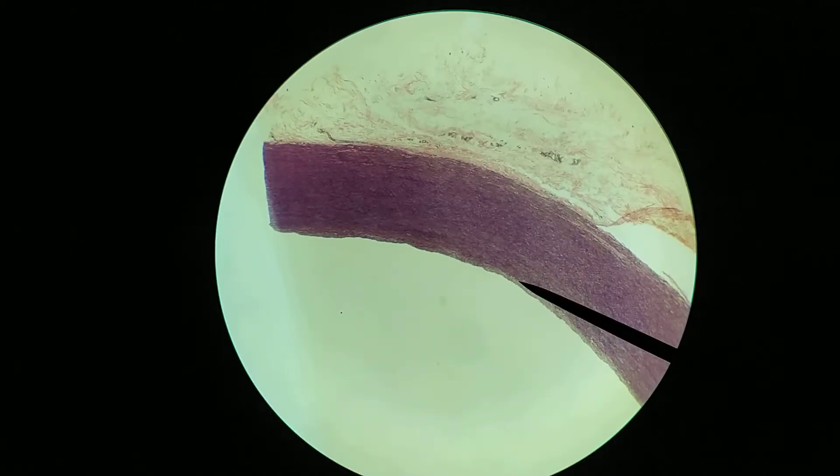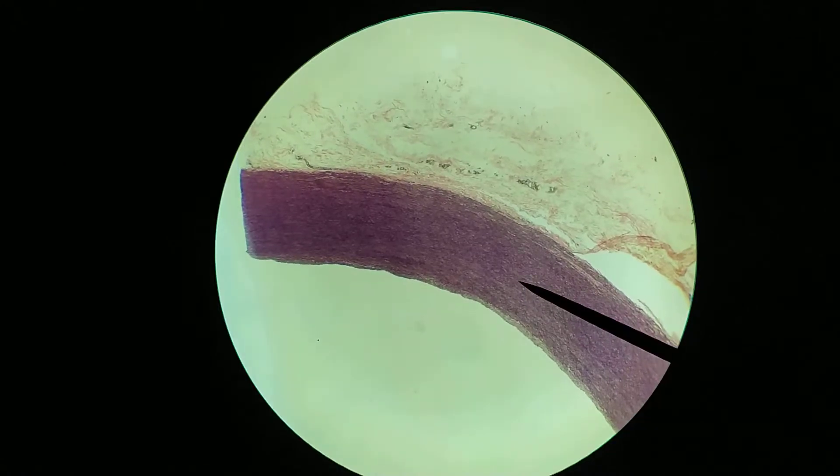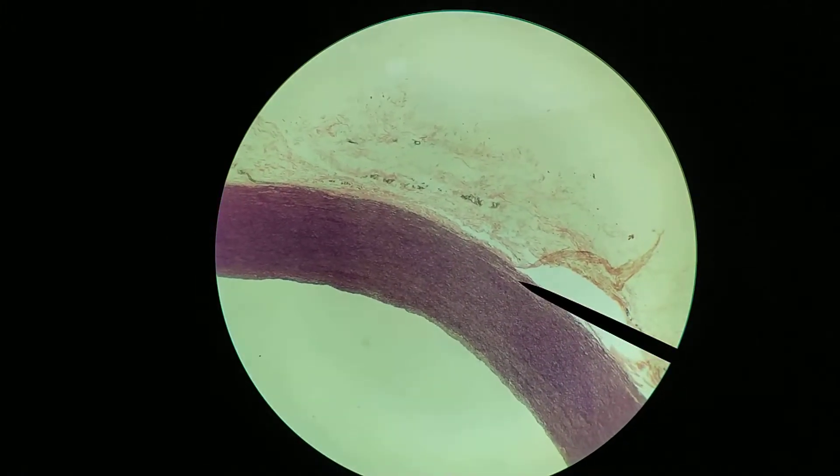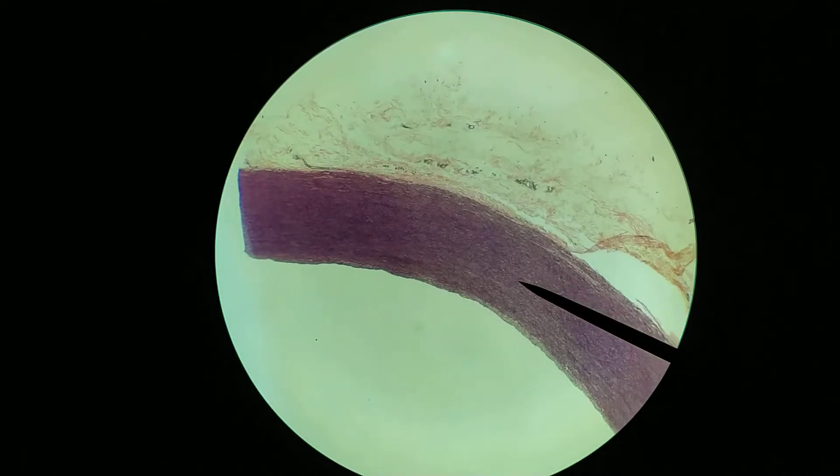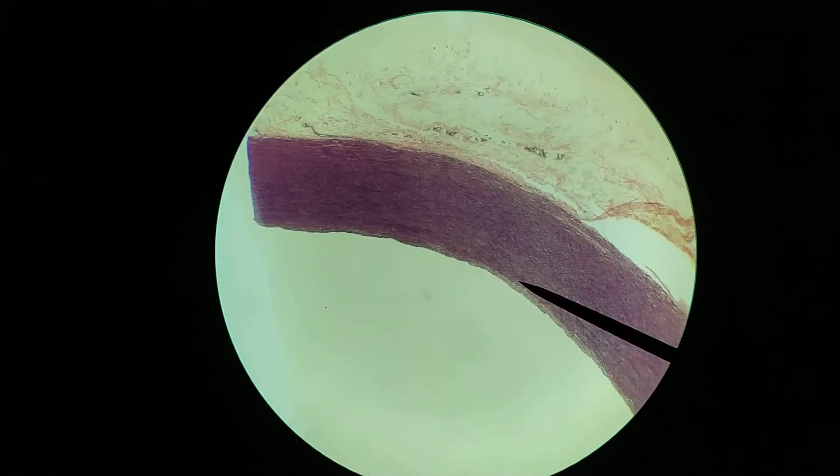And then we have the tunica media, which is this more intensely staining region, which has a lot of elastic fibers and a lot of smooth muscle. You can see it's a very thick layer in this case. This is a very thick, very strong blood vessel.